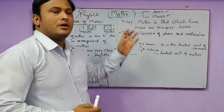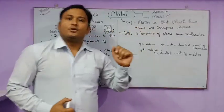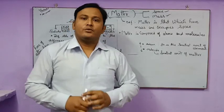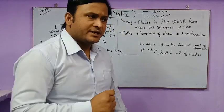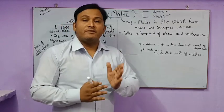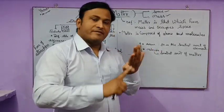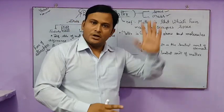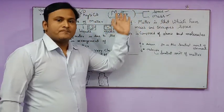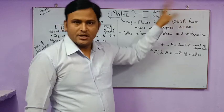Hello students, today I am here to teach you chapter number one of physics. In class 5th you studied science as a whole. Now science will be divided into three parts: physics, chemistry, and biology. Here is physics chapter number one — Matter. Matter is associated with two key words: space and mass.